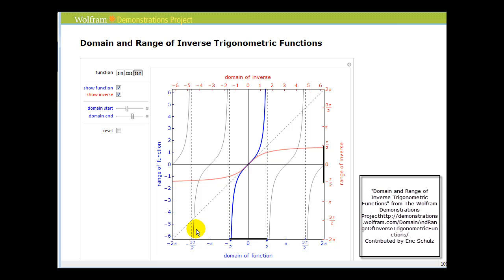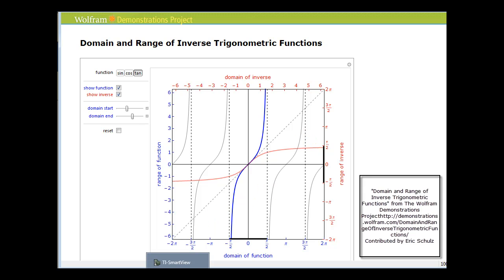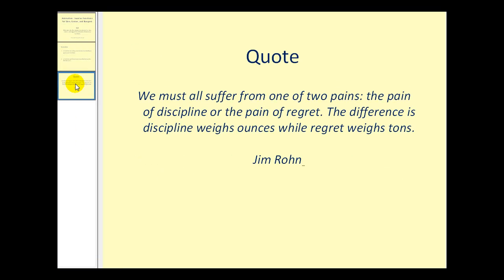You can see now the blue function does pass the horizontal line test, and as a result the inverse in red passes the vertical line test and therefore is an inverse function. So this is really why we have to restrict the domain on sine, cosine, and tangent in order to find the inverse trig functions. I hope you found this illustration helpful. Thank you for watching.